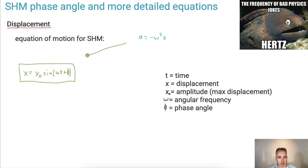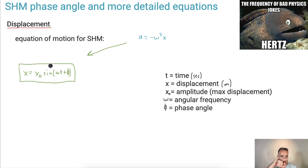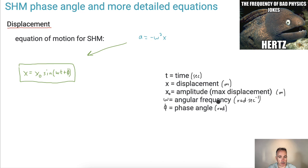So basically you can get from the differential equation to that formula. Let's look at what everything here is. T is time, in seconds. X is the displacement of your object from its equilibrium, in meters. X₀ is the amplitude, or the maximum displacement — from the middle to the left or right — also in meters. Omega is the angular frequency, in radians per second. And phi, the phase angle, is something new — it's measured in radians.